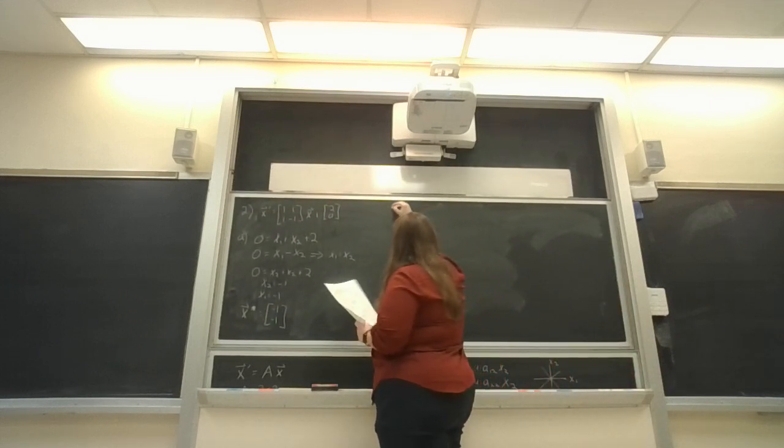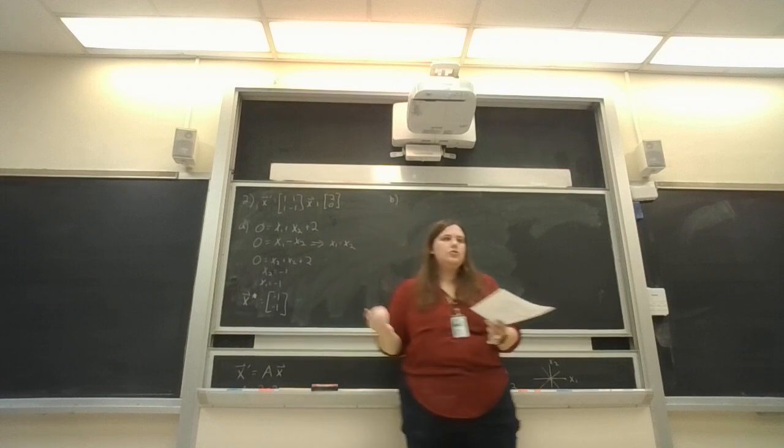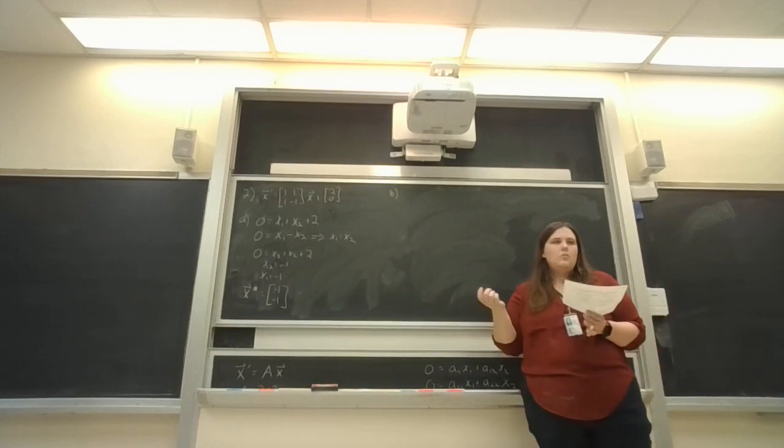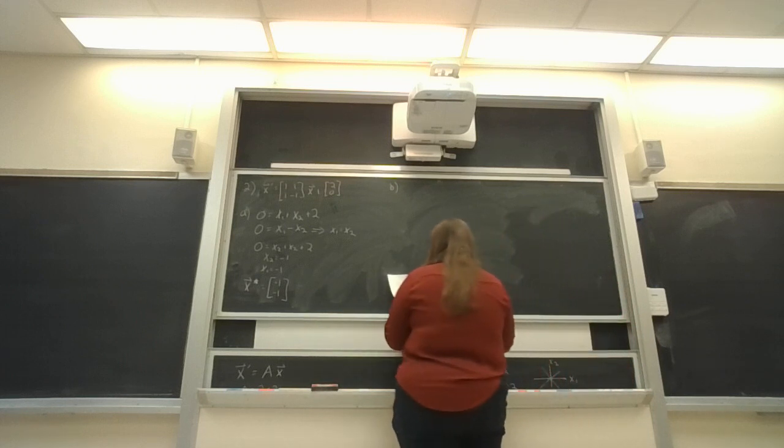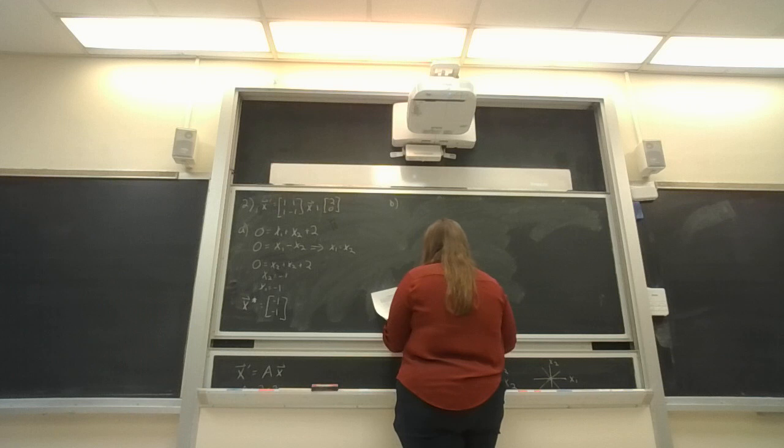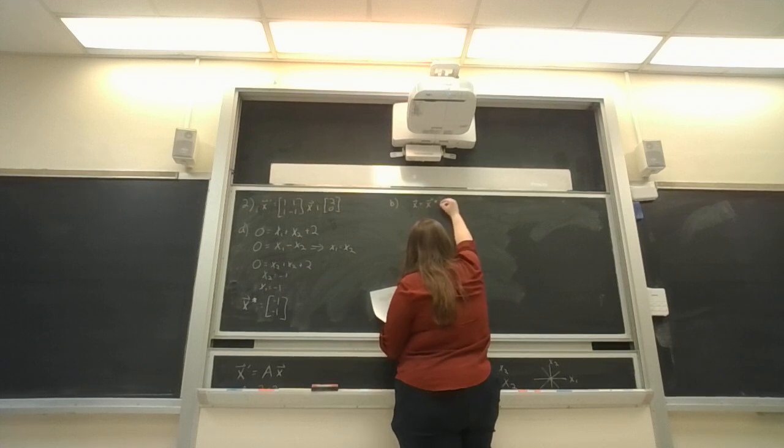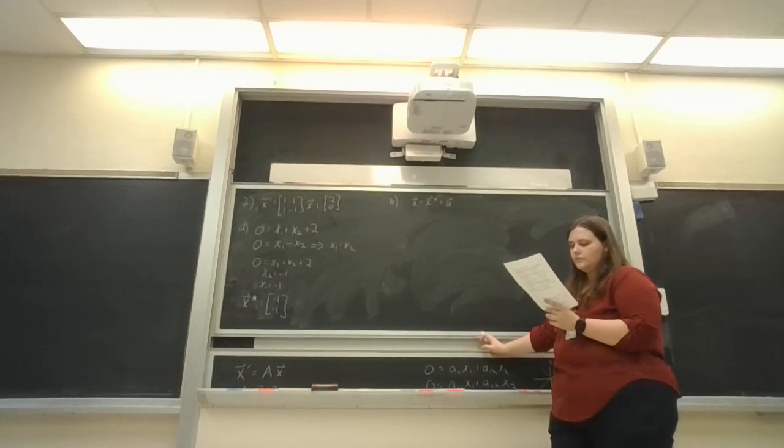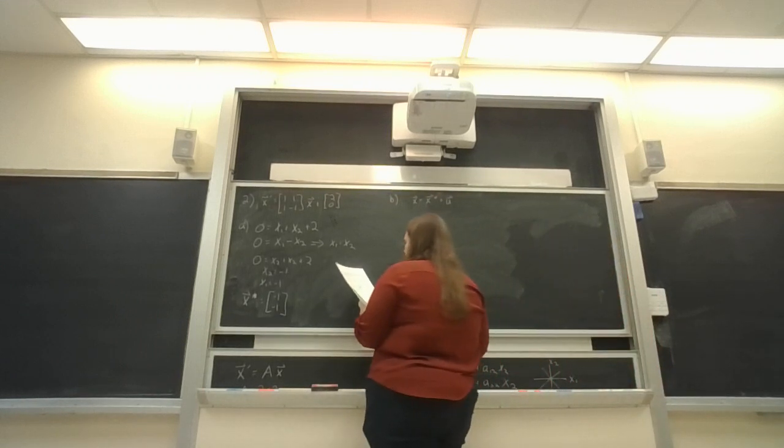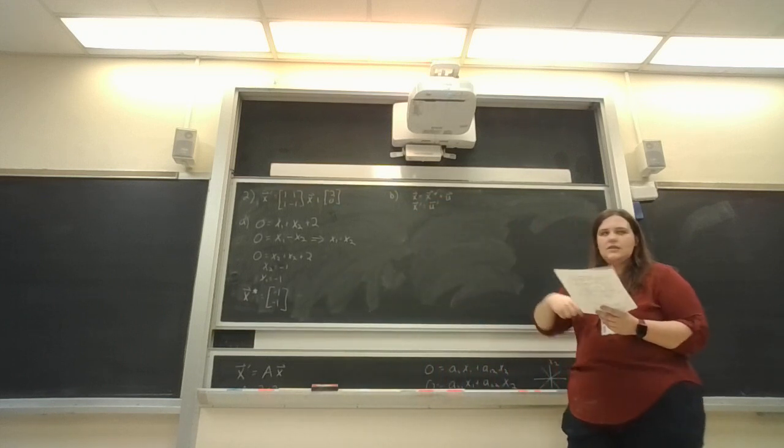So the way we're going to achieve this: our goal is to turn this non-homogeneous system into a homogeneous system because we have all this information about what the critical point of a homogeneous system looks like—we just wrote a whole chart about it. We're going to do this by having a change of variables. We are going to let x equal x* plus u, and we're also going to let x′ equal u′.